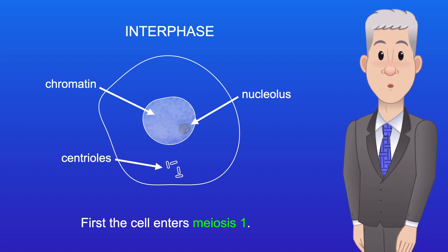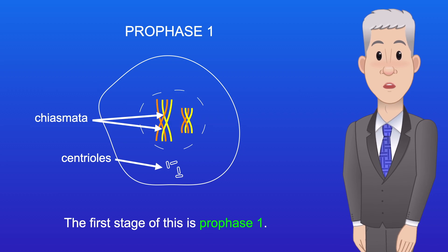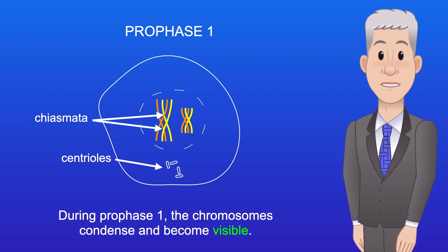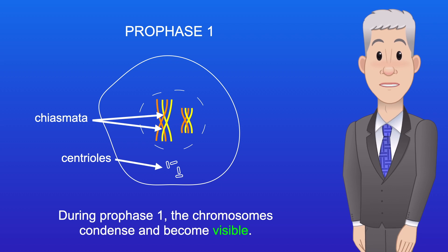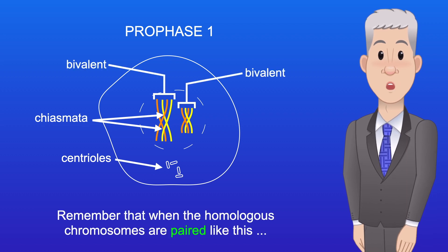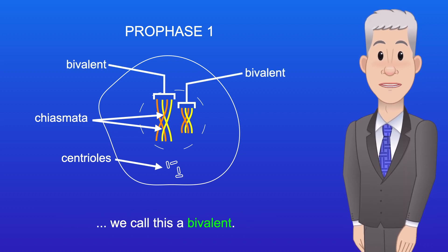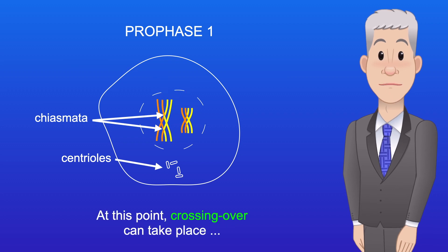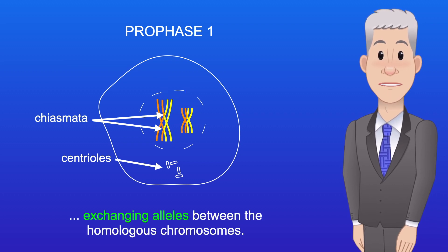First, the cell enters meiosis I, and the first stage of this is prophase I. During prophase I, the chromosomes condense and become visible. Homologous chromosomes link together, forming chiasmata. Remember that when the homologous chromosomes are paired like this, we call this a bivalent. At this point, crossing over can take place, exchanging alleles between the homologous chromosomes.